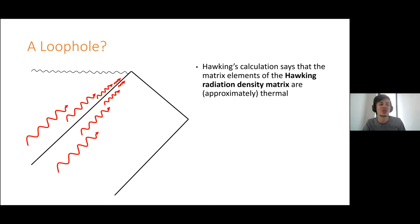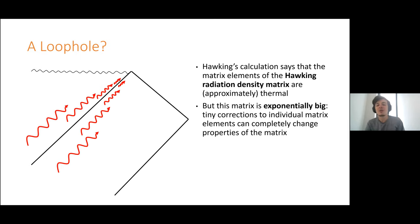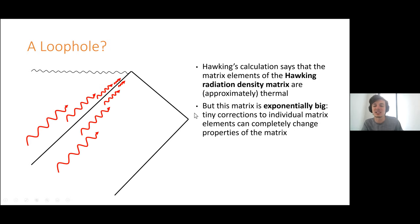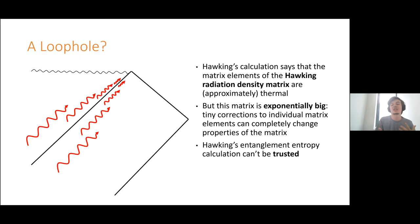There exist non-perturbative, exponentially small — like order two to the minus number of qubits — errors in this calculation. But the Hawking radiation density matrix itself is an exponentially big matrix, ordered by the dimension of the Hilbert space. So just adding these tiny corrections to individual matrix elements could completely change properties of the density matrix, and in particular can completely change its entanglement. They can make the full density matrix be very far away from a thermal state, even if the individual matrix elements are very, very close. As a calculation of entanglement entropy, Hawking's calculation can't be trusted; as a calculation of matrix elements, it's great, but the entanglement entropy is completely out of control.